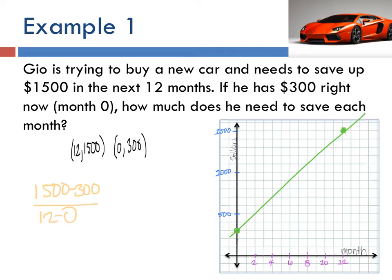Fifteen hundred minus three hundred is, mental math, twelve hundred over twelve. Twelve hundred divided by twelve, you get one hundred. So what does this mean?